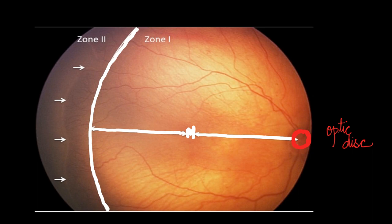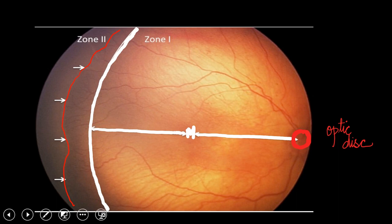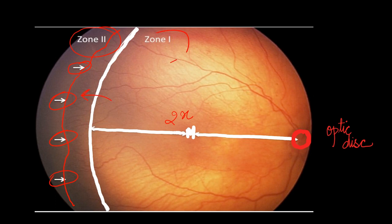In this next case, arrows indicate the junction between vascular and avascular retina. The zone 1 circle is drawn using twice the optic disc-to-macula distance as the radius, and the pathology is present well beyond zone 1 into zone 2. More specifically, this is zone 2 posterior disease, because the pathology is within two disc diameters from zone 1.